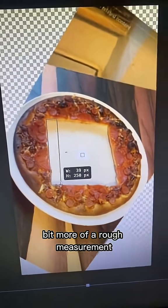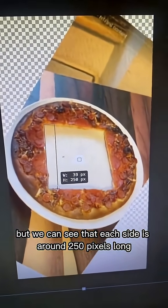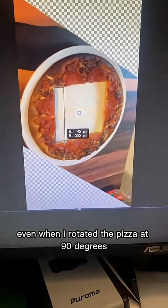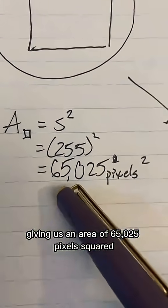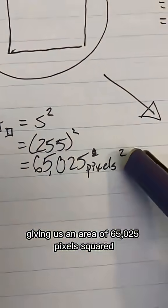The square on the center is going to be a bit more of a rough measurement, but we can see that each side is around 250 pixels long. And this roughly held true even when I rotated the pizza 90 degrees. But being generous, we can say each side is 255 pixels long, giving us an area of 65,025 pixels squared.